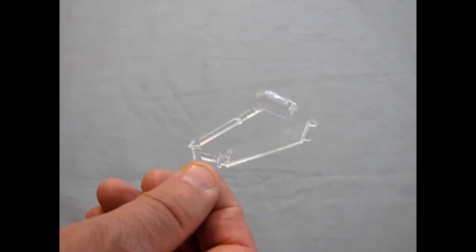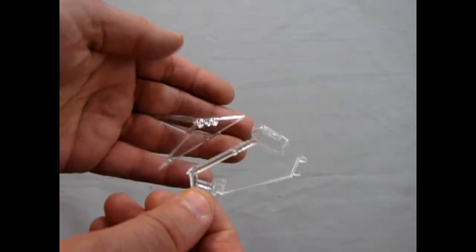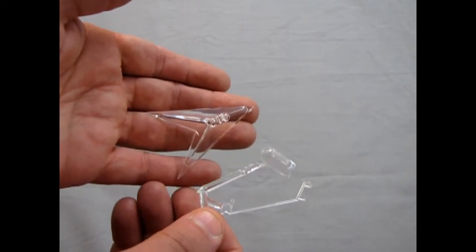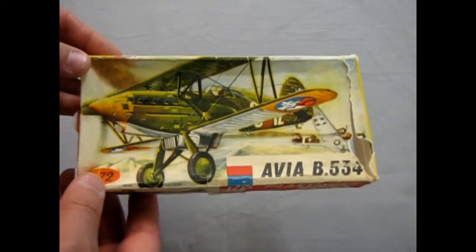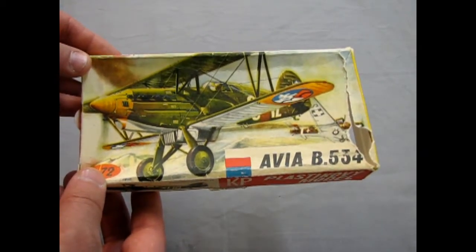And then, we finally get to our clear parts. You get a canopy. And you also get that nice arrowhead stand. And that brings us to the end of our review of the Avia B534.